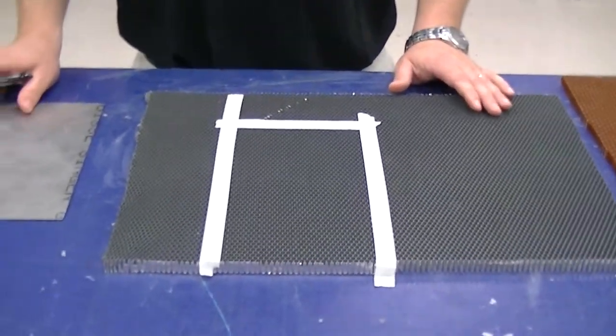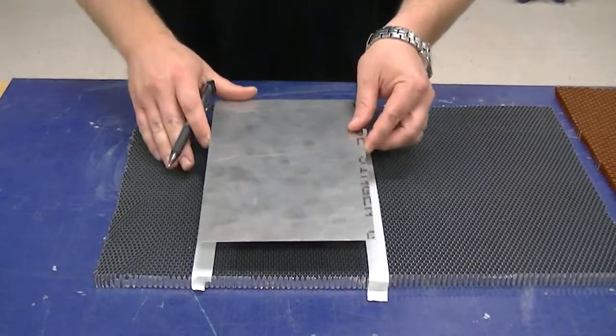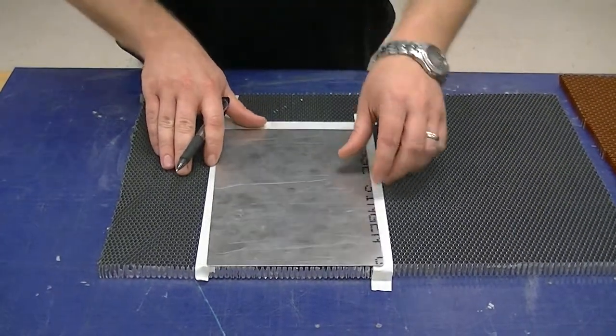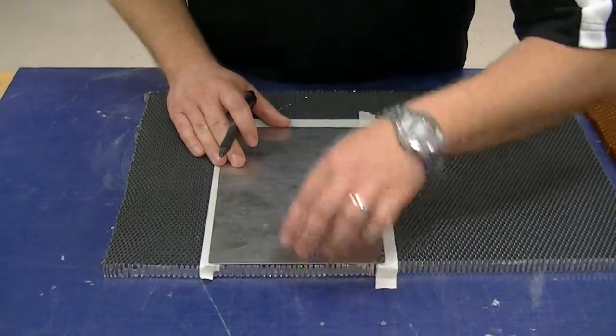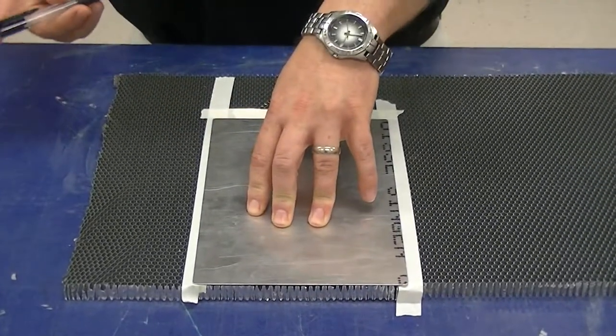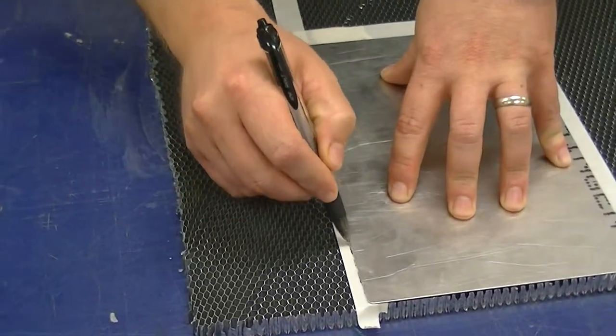What I've done here is I've applied masking tape in the shape of my template, and I'm going to lay my template down, flush out on the outside edge here, and to get that straight line, I'm simply going to take and mark on top of the masking tape.